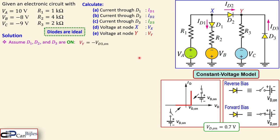With this assumption, VY will be minus VD3_on, so it is minus 0.7 volts. That gives us one of the unknowns. For VX, since the voltage drop between node X and node Y is 0.7 V due to D2, and VY is minus 0.7, we get: VX equals VD2_on plus VY, which is 0.7 minus 0.7 equals 0 volts. So in this condition VX is 0 volts.